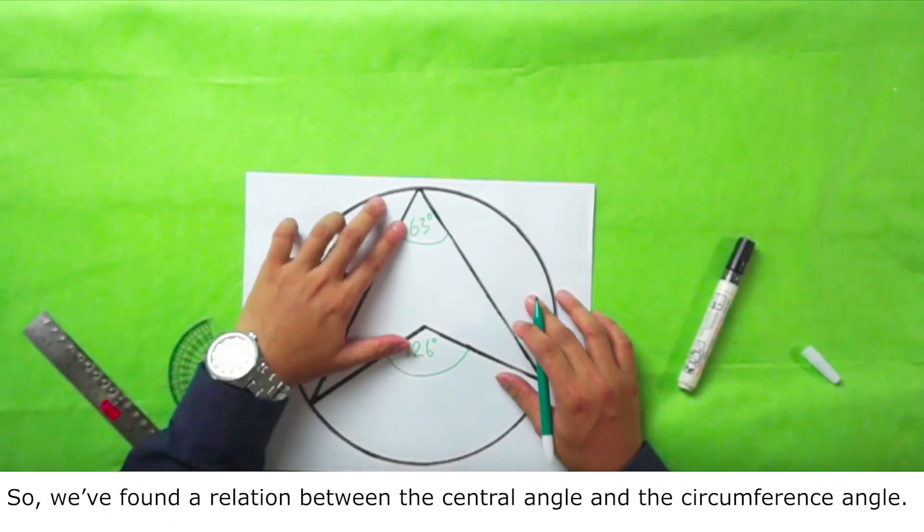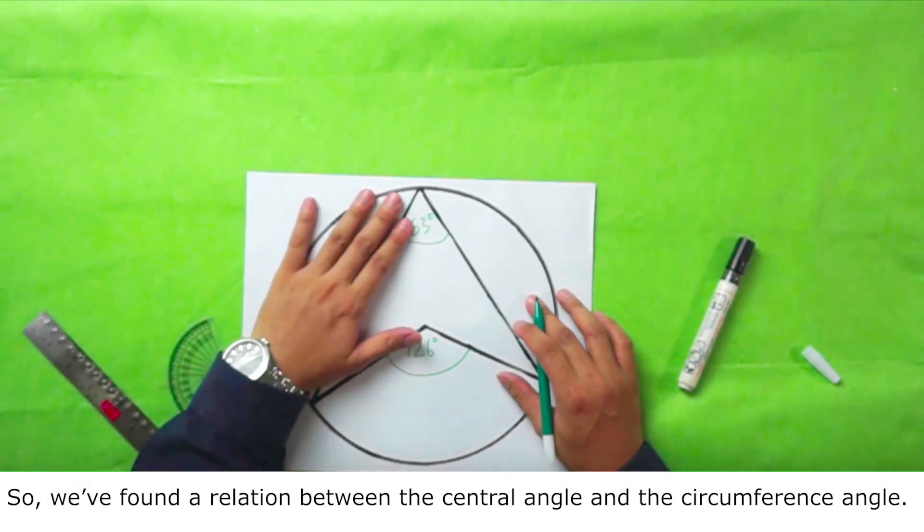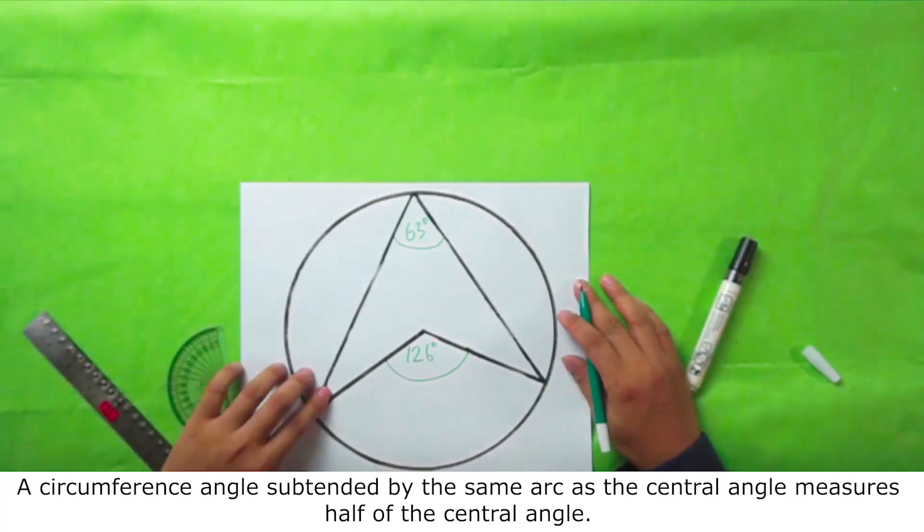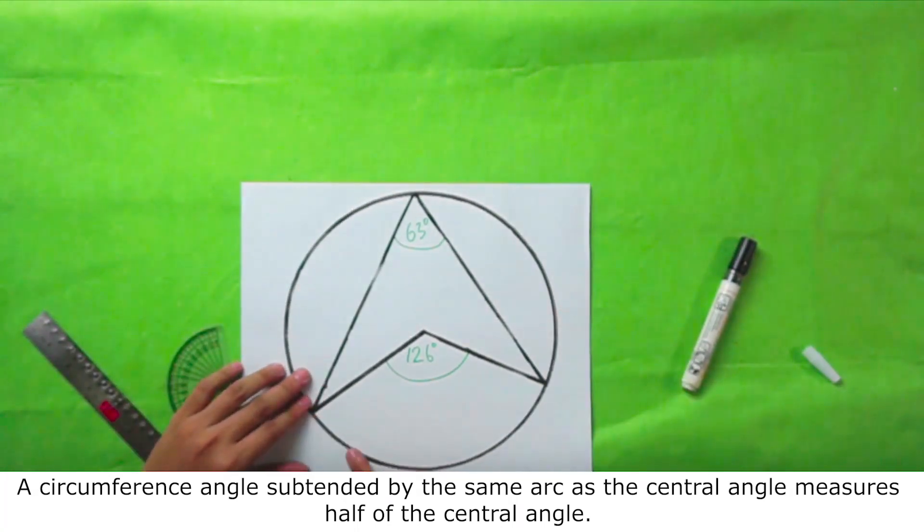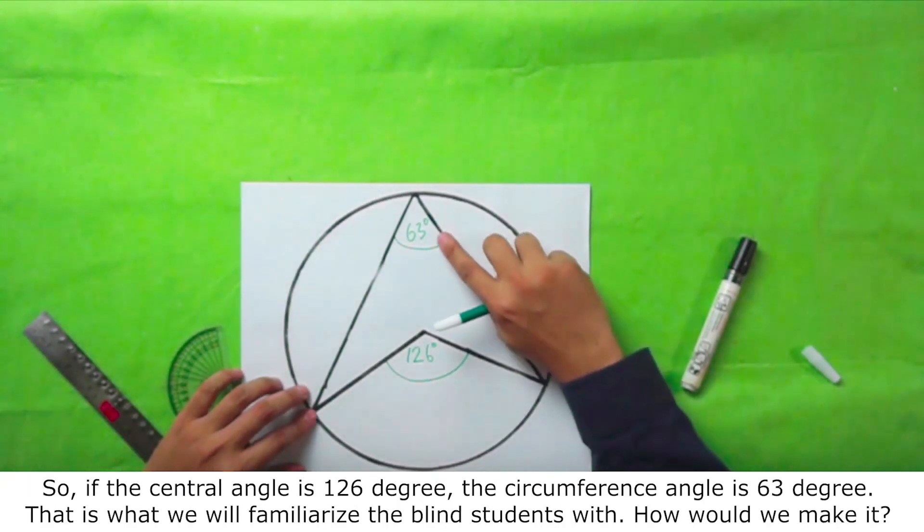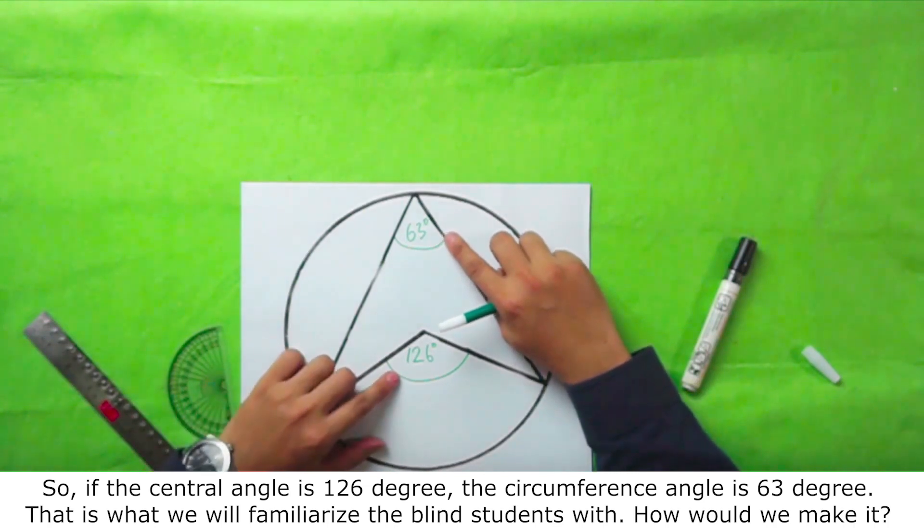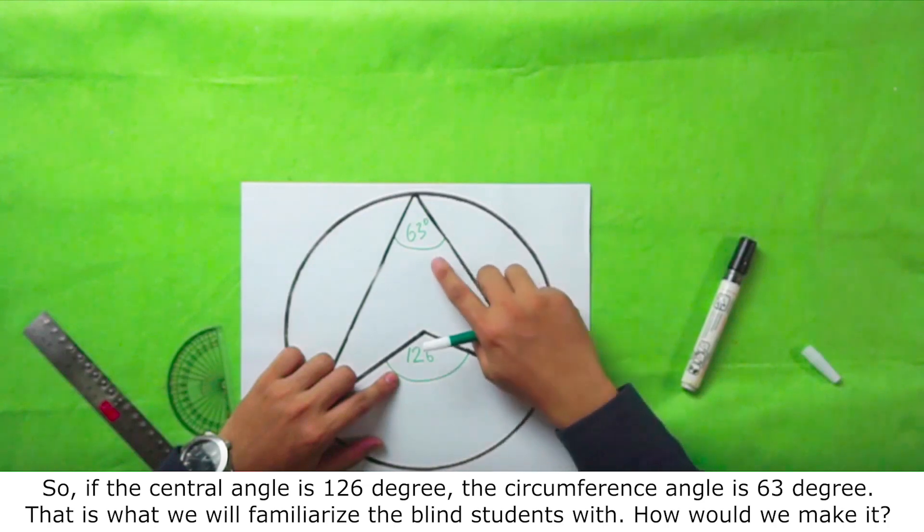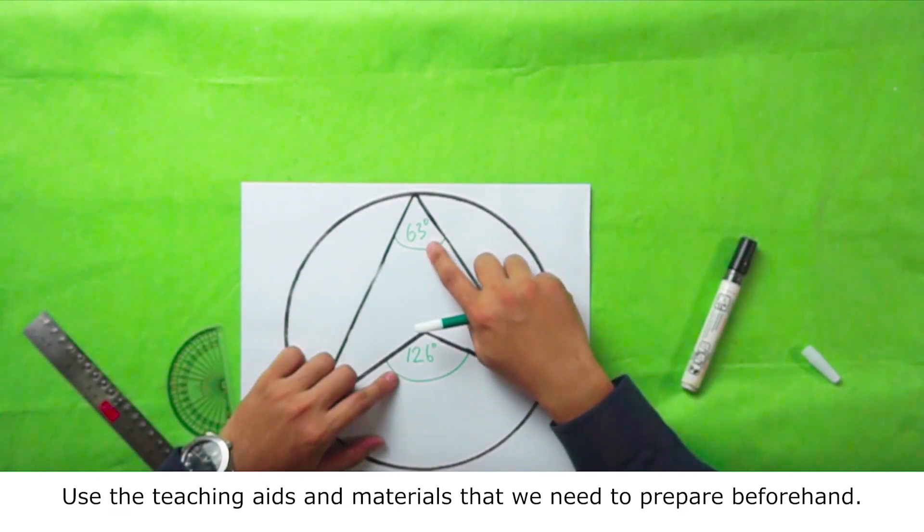So we found a relation between the central angle and the circumference angle. A circumference angle subtended by the same arc as the central angle measures half of the central angle. So if the central angle is 126 degrees, the circumference angle is 63 degrees. That is what we will familiarize the blind students with. How would we make it? Use the teaching aids and materials that we need to prepare beforehand.